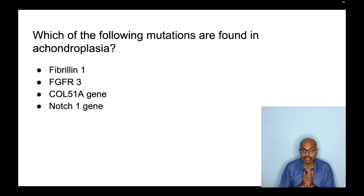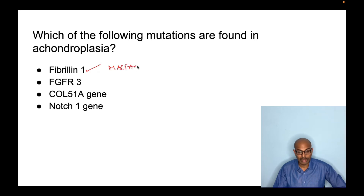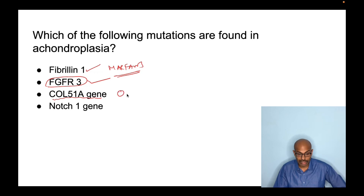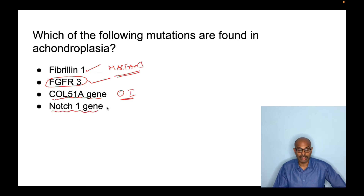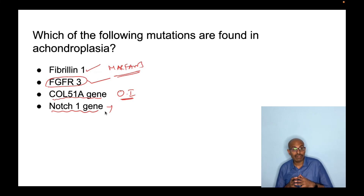Now let's go through two representative exam questions. The first: which mutation is found in achondroplasia? The fibrillin-1 gene causes Marfan syndrome. FGFR3 is the correct answer for achondroplasia. FGFR2 mutation causes Apert syndrome. COL5 gene mutation causes osteogenesis imperfecta due to type 1 collagen mutation. Notch-1 gene mutation is unrelated to orthopedics and can cause lymphoblastic leukemia.